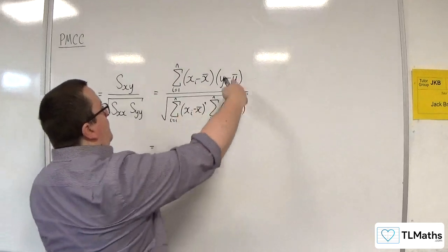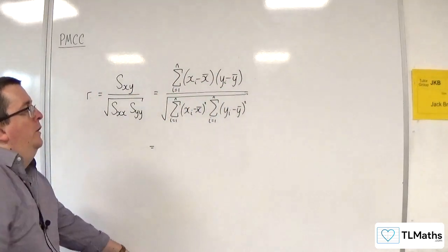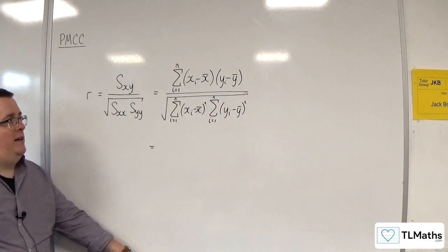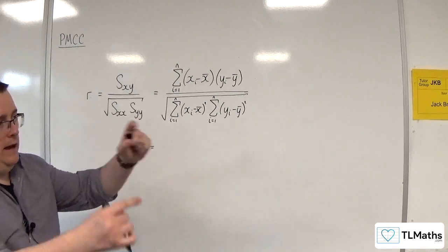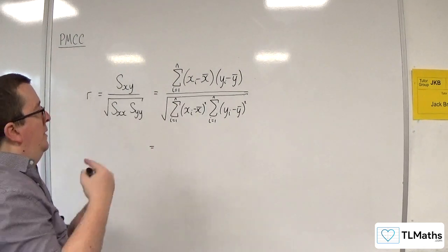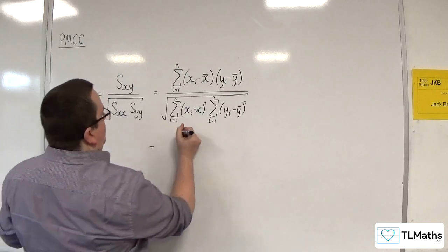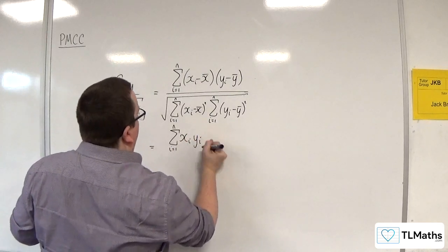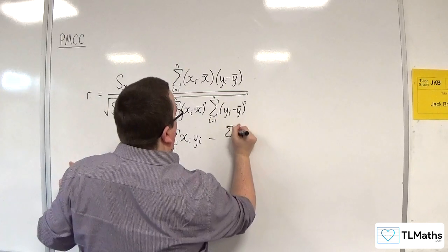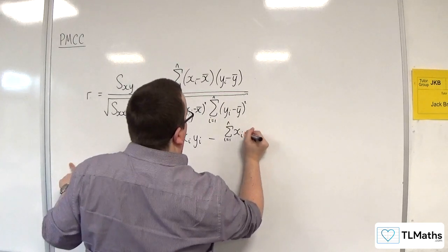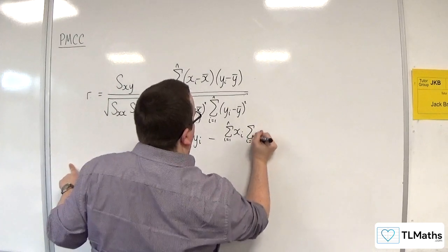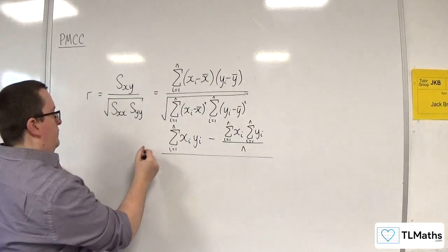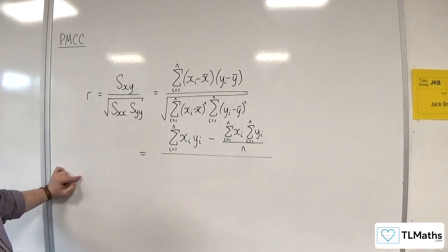So this form is not given in the OCR MEI formula booklet because it's just cumbersome to use. So instead, you've got the alternative form with summary statistics, which looks like this. So it's the sum from I equals 1 to N of XIYI take away the sum from I equals 1 to N of XI times the sum from I equals 1 to N of YI over N. So that's SXY.